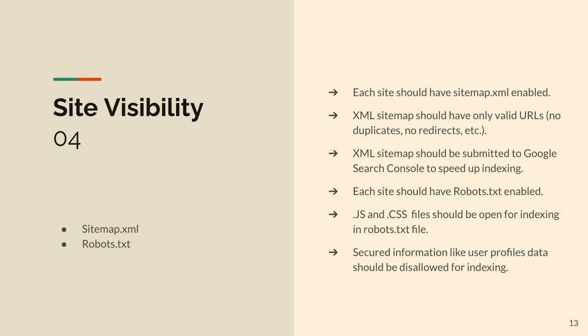XML sitemap should have only valid URLs. Just enabling the module doesn't mean you are done — you have to make sure all information there is relevant. All aliases should be present, there are no node IDs, no broken links, and no secured content. You don't want user profile links, for example, exposed to search engines. When doing SEO checks, think of it as making sure someone browsing your website is not getting access to secured content while getting as much open information as possible.